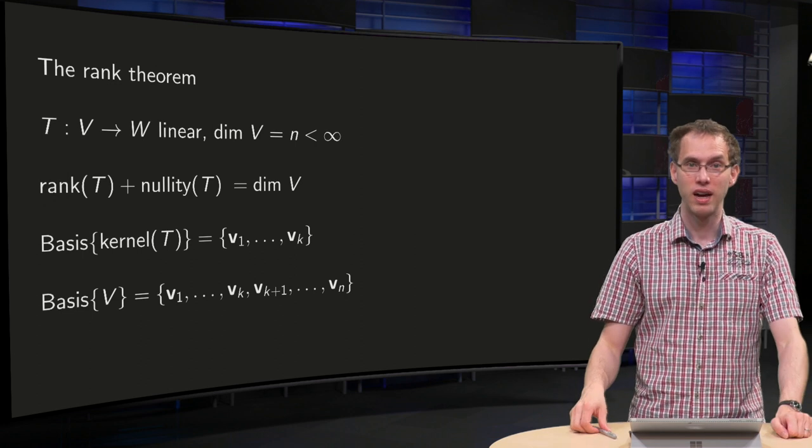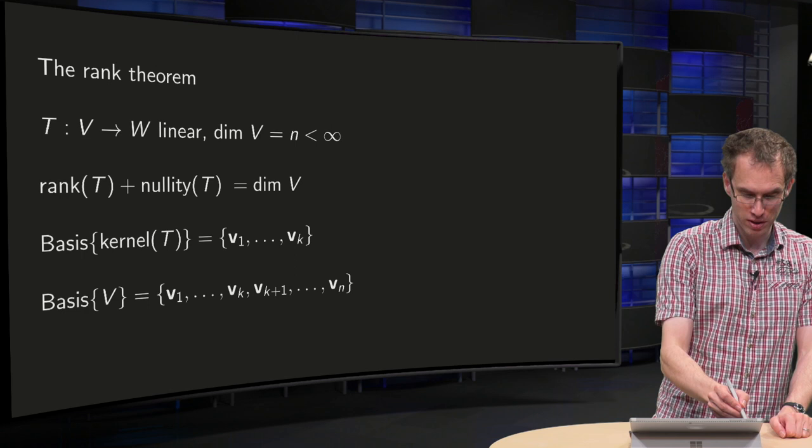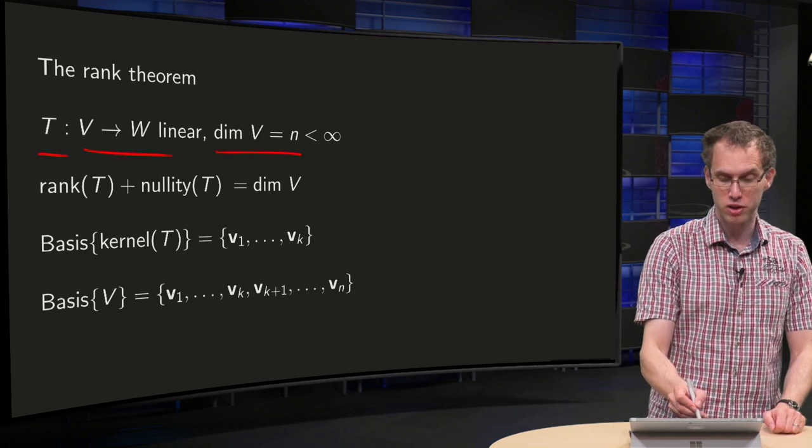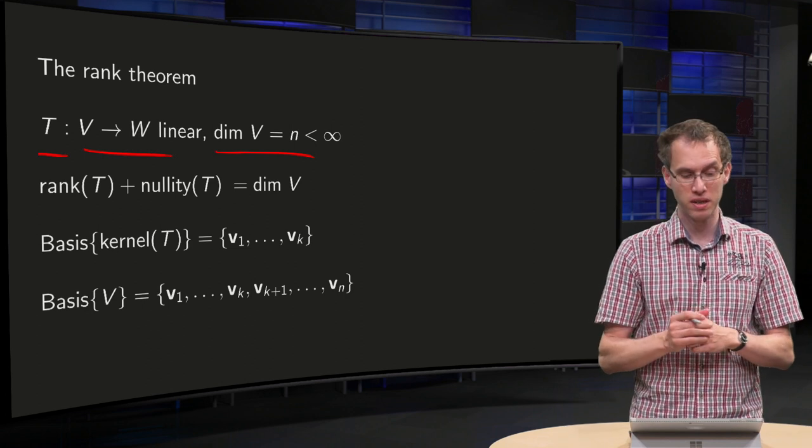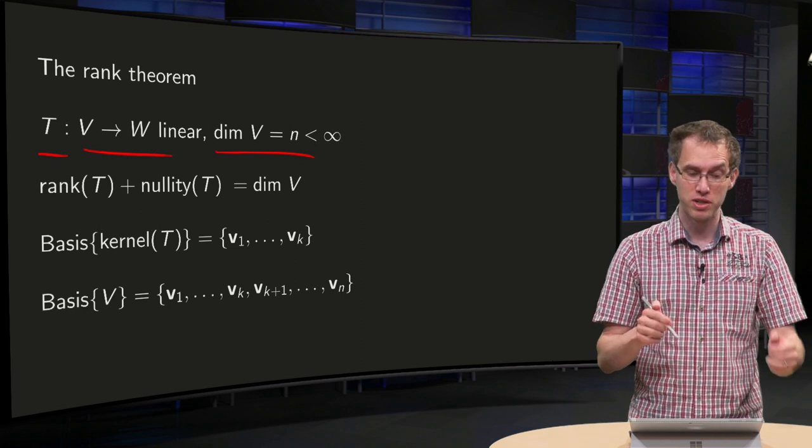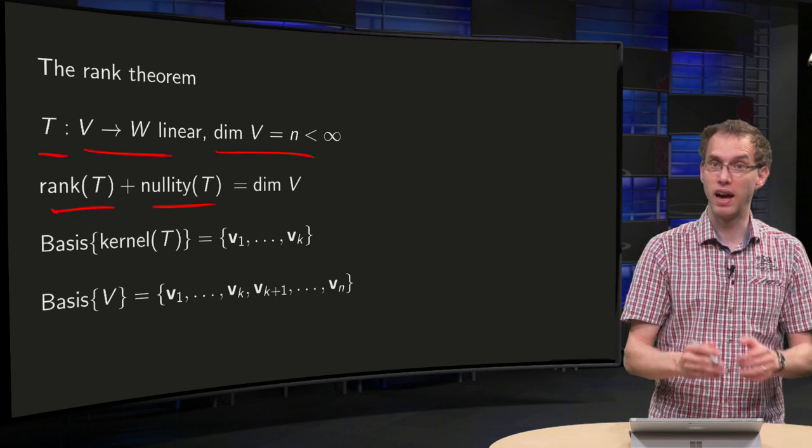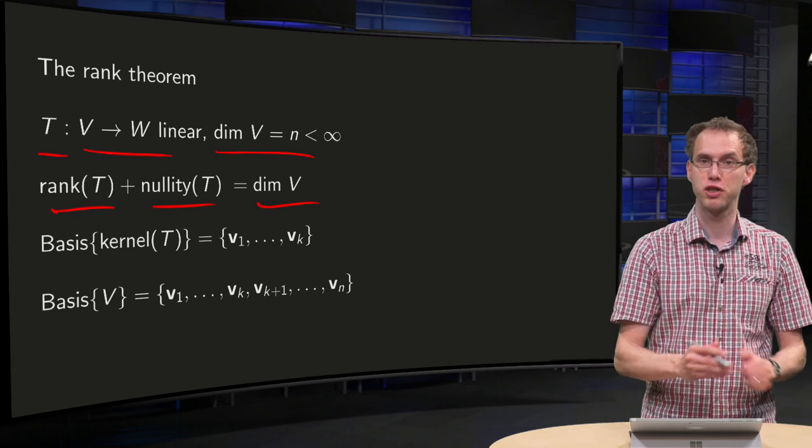So, what's the idea? If you have a transformation T from V to W, linear, dimension of V equals n smaller than infinity, and the theorem says that indeed, the rank of the transformation plus the nullity together gives us n, the dimension of the vector space V.